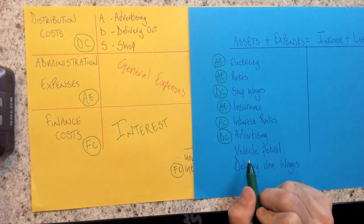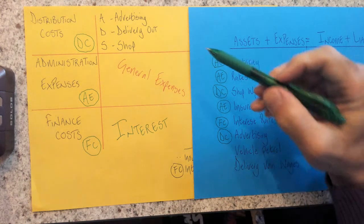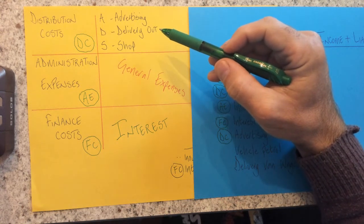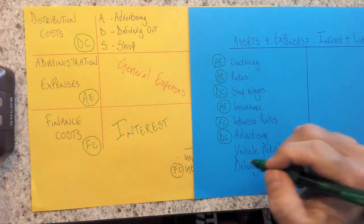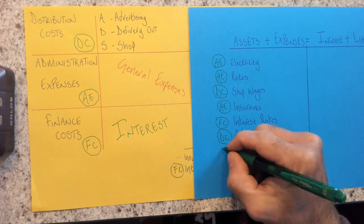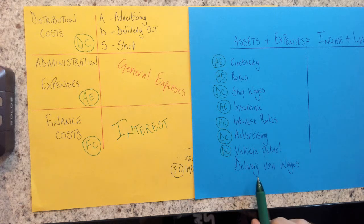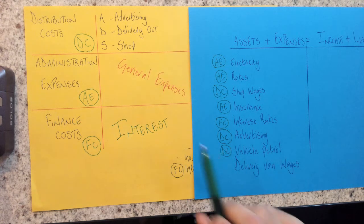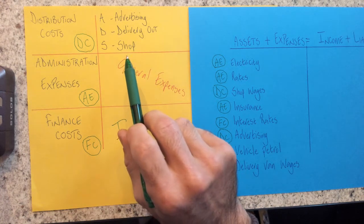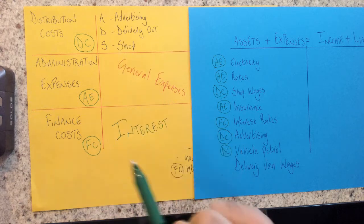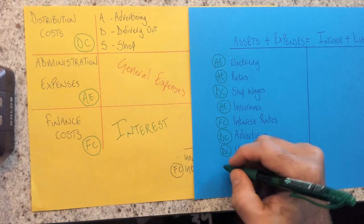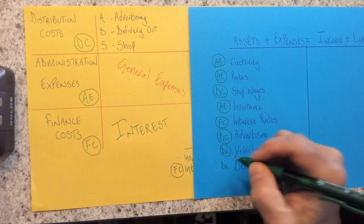There we go. Vehicle petrol. Vehicle petrol has got to do with the delivery of our product to our customer. So therefore, that's also going to be a distribution cost. And then our delivery van wages, or our driver's wages, if you like. Of course, and that's got to do with delivery. So again, that's the distribution cost.